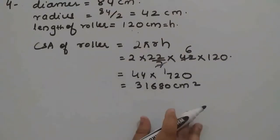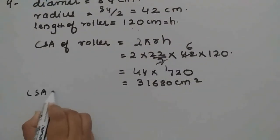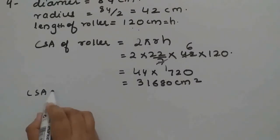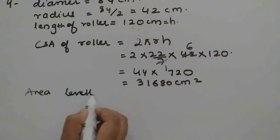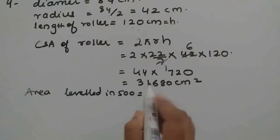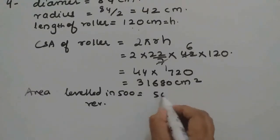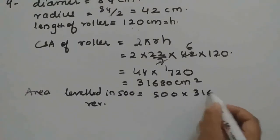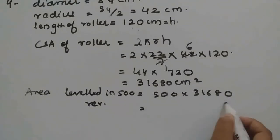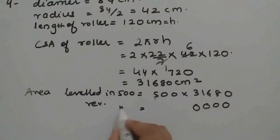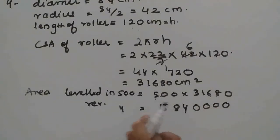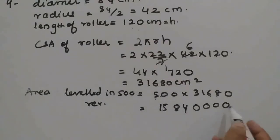Now for 500 revolutions, CSA of roller is 500 multiplied by 31,680. There are 3 zeros, so multiply 5 by 31,680 giving us 1,58,40,000 — wait, the result is 1,58,40,000 cm².